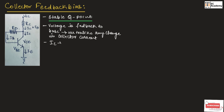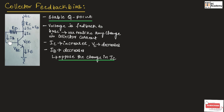If collector current increases, then the collector voltage decreases, which in turn decreases the base current, which will oppose the original change in collector current. We can write IE is equal to VCC minus VBE divided by RC plus RB divided by beta DC.